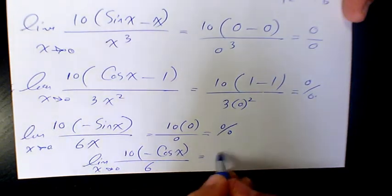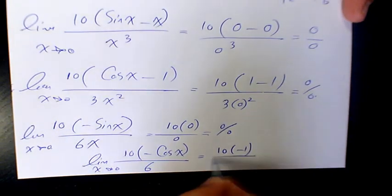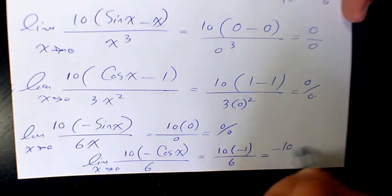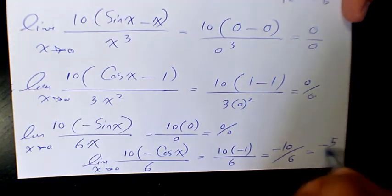that's going to be 10 times negative one over six. That's negative 10 over six, which is negative five over three. That's the final answer.